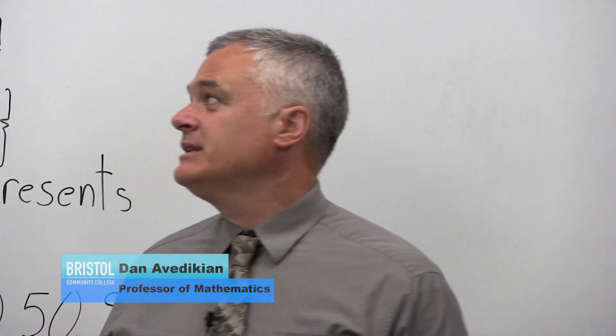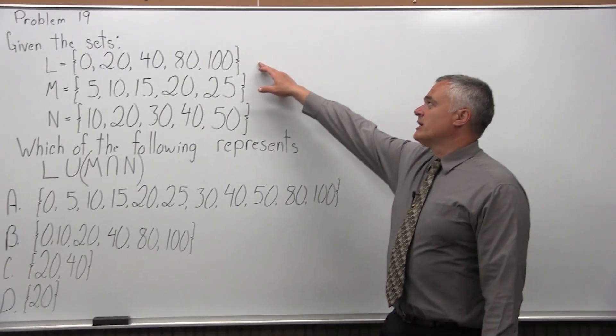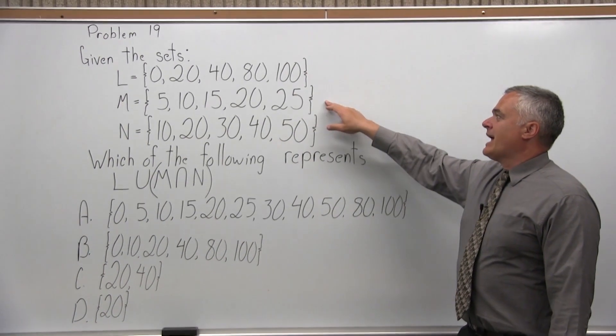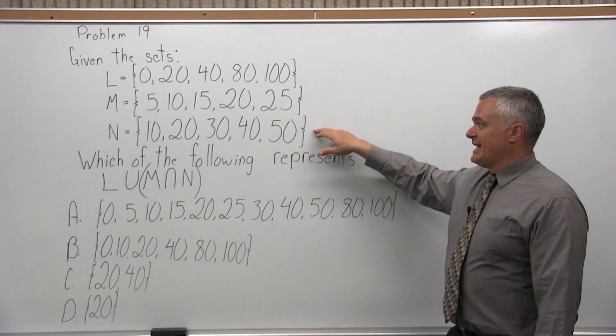This is Problem 19. It says given the sets: the set L is 0, 20, 40, 80, 100; the set M is 5, 10, 15, 20, 25.